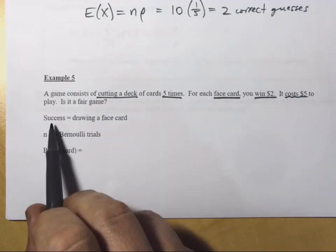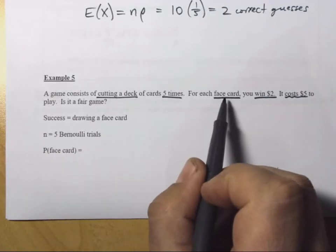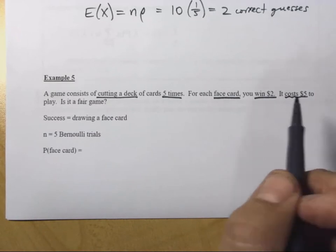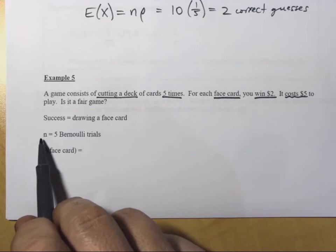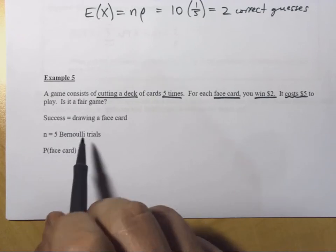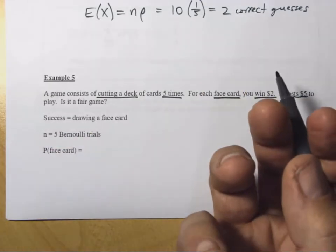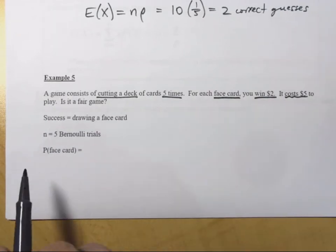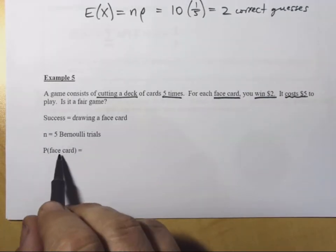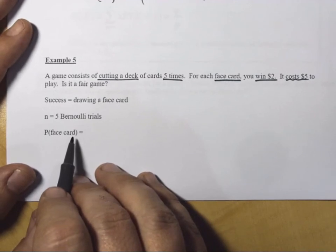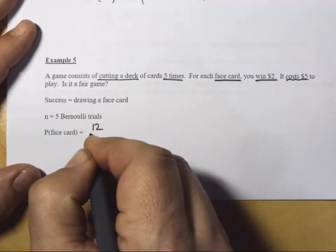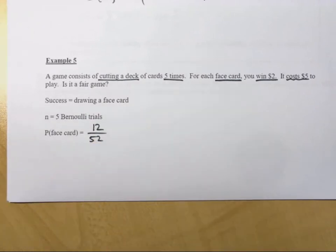Okay. So, we know that success here is drawing a face card. If you draw a face card, you win $2. If you draw any other card, you don't win anything. So, N equals 5. These are Bernoulli trials because you either did cut a face card or you didn't. Success, failure. What is the probability of cutting a face card on each draw? Well, P, probability of face card. There are 12 face cards in the deck. And we assume there are 52 cards in the deck. So, you've got a 12 in 52 chance of doing that.